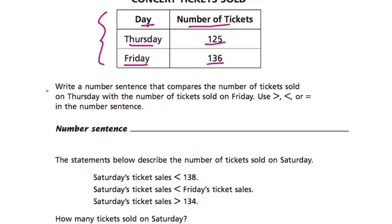What are they asking us to do? Well, they say write a number sentence that compares the number of tickets sold on Thursday with the number of tickets sold on Friday. Use, and then here's our inequality signs or an equality sign, in the number sentence.